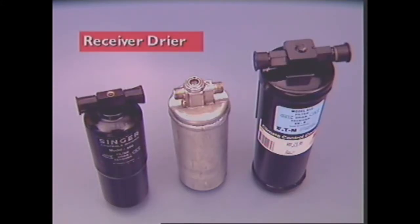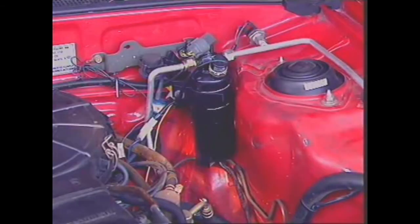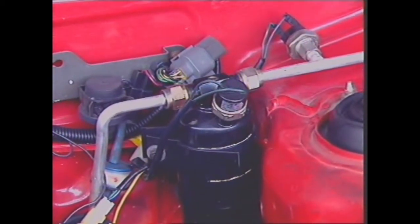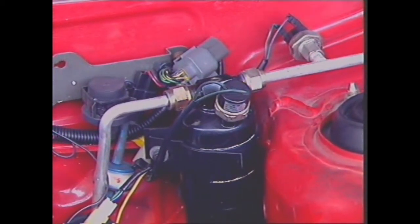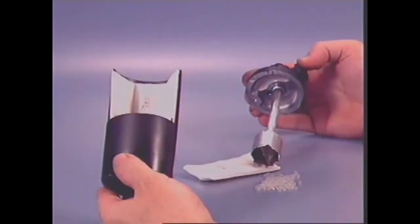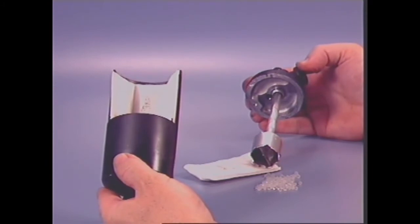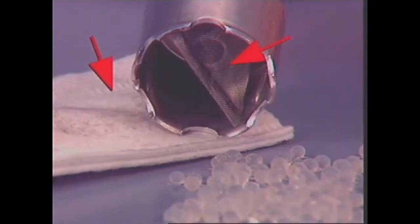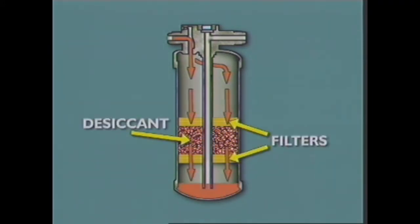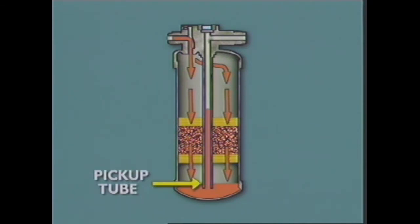This section examines air conditioning receiver dryers. The receiver dryer is normally mounted in the high-pressure line between the condenser and the TX valve. It receives liquid refrigerant from the condenser and stores it until required by the TX valve. The receiver dryer is a sealed metal canister which contains filters to remove impurities and desiccants to absorb moisture. High-pressure liquid enters, passes down through the filter and desiccant material, and exits via the pickup tube at the bottom of the canister, moving on to the expansion valve.